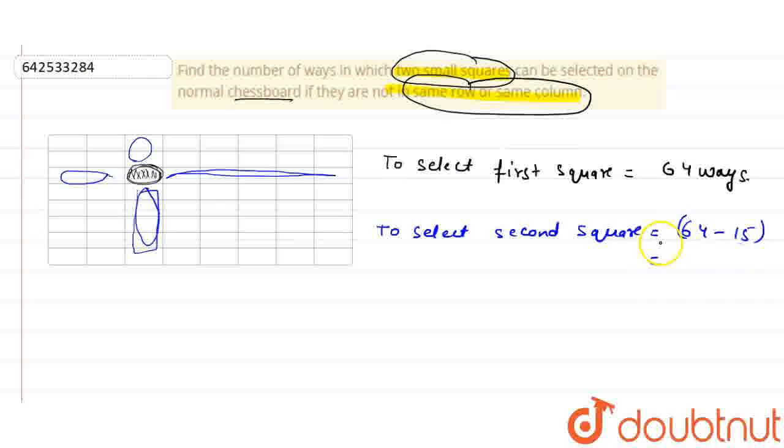And why I am subtracting 15 from it? These are the one which includes the 15. There are 16 rows and columns and one is selected at random. Therefore, the rest 15 cannot be selected for the second square. This is the condition which is asking in the question. Therefore, the remaining 49 are the one which can be selected for the second square.